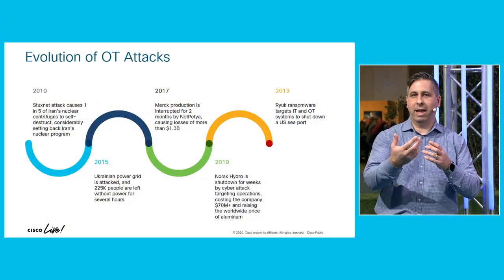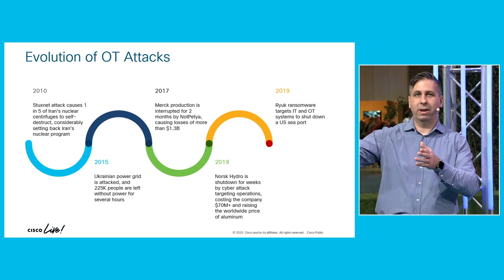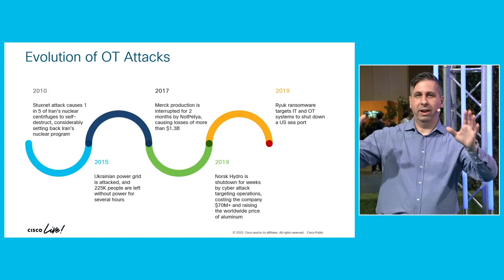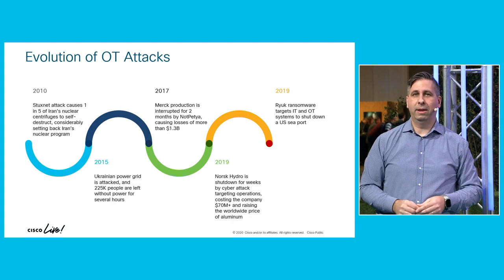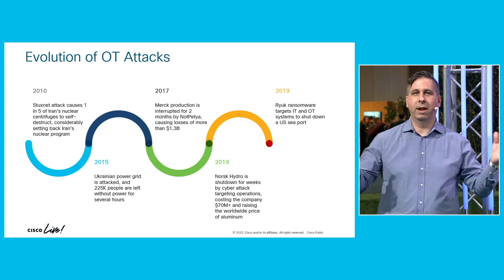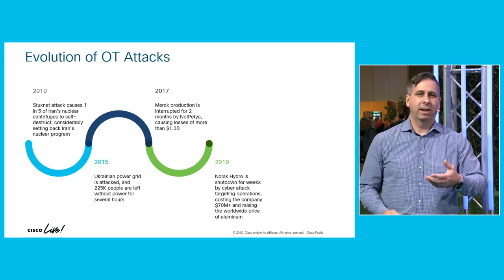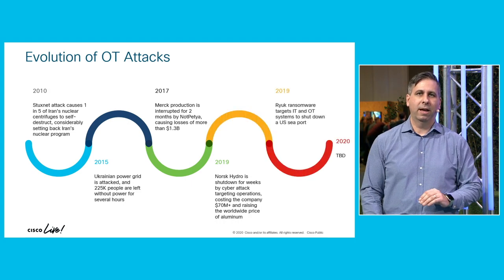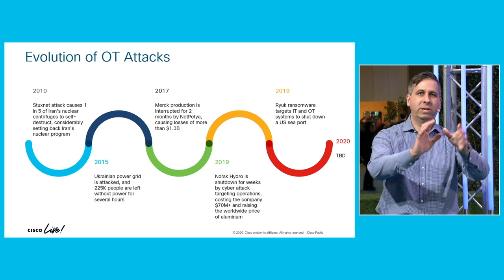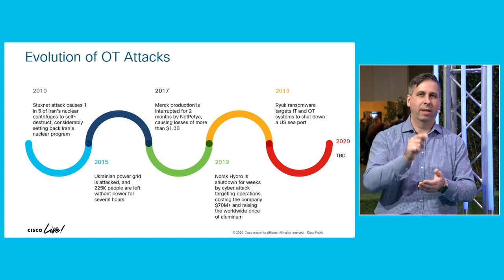Less than a month ago, a U.S. port was shut down because ransomware that came in through IT found its way to the OT networks and started shutting down the systems that load freighters onto boats — even shutting down video surveillance systems. Recent analysts report that 40% of attacks are now OT-targeted. If you really want to hit a company hard and make them hurt, that's how you do it.